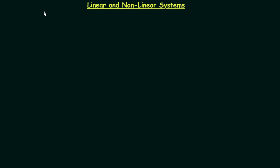Based on the linearity property we can divide the systems into two types: the first one is linear systems and the second one is non-linear systems. In this presentation I am going to explain what are linear and non-linear systems, and once we are done with the definition and basic understanding of the two systems, we will solve one example to understand the topic in a much better way.